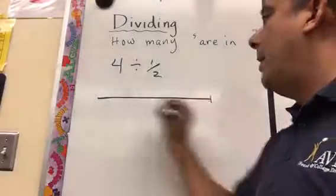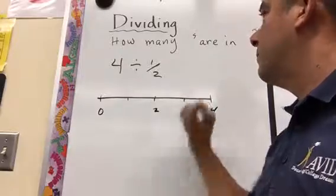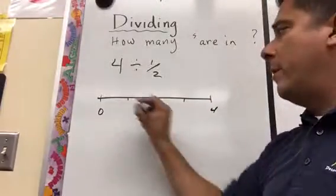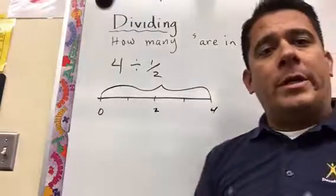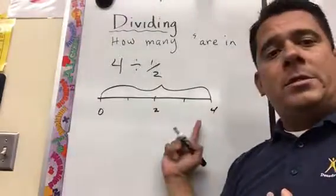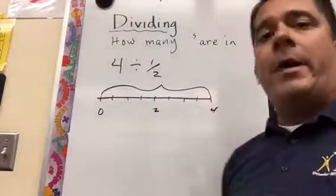So again, we can look at it on a number line. Here's 0, here's 4. So when we look at the 4, and we're trying to indicate how many halves are in there, these are the whole numbers. So we would need to indicate where our halves are.